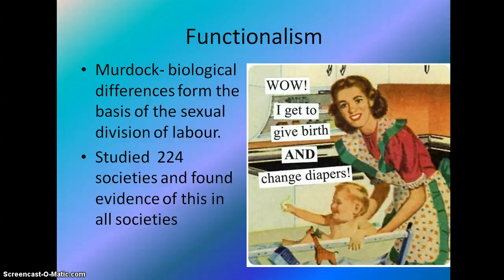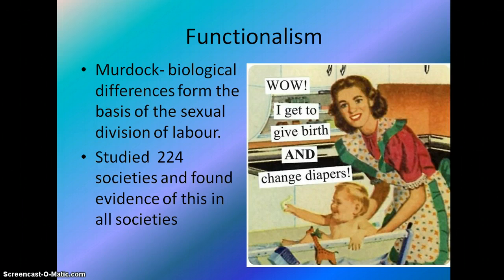Functionalists explain this by saying women are biologically different to men, and that biological differences form the basis of the sexual division of labour. As Murdoch refers to, there is a specialised division of labour where men are more likely to do paid work in the workplace and women are likely to stay at home and look after the children. Biological differences such as men's greater physical strength and women bearing children lead to gender roles out of sheer practicality. A sexual division of labour, they argue, is the best and most efficient way of organising society — it works, it functions well.